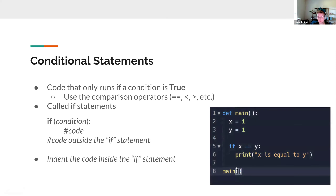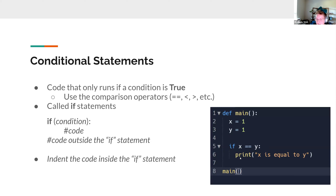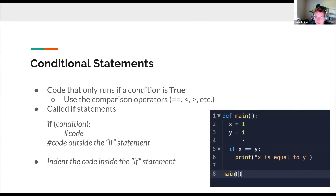Here's an example: x = 1, y = 1. Then: 'if x == y:' — indent — 'print(x is equal to y)'. So we have two variables and an if statement using comparison operators. If x equals y is true, then the indented code runs and prints 'x is equal to y'.